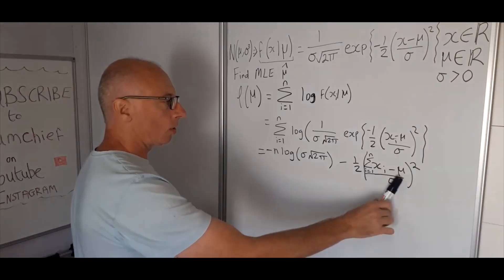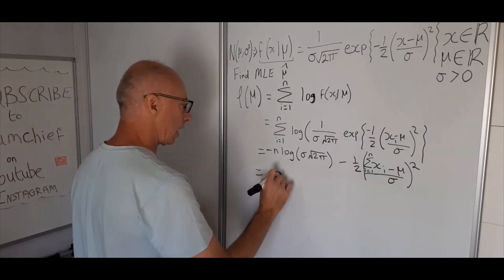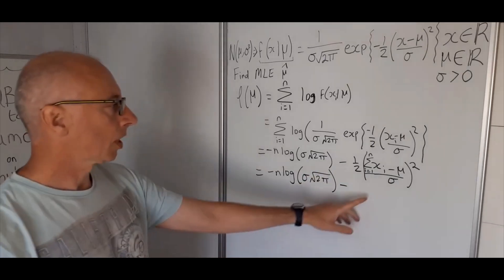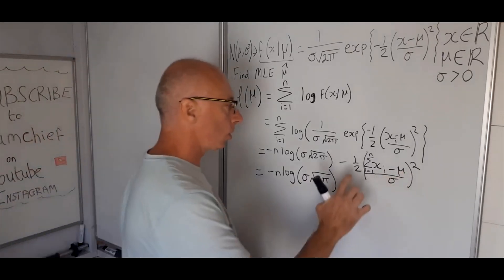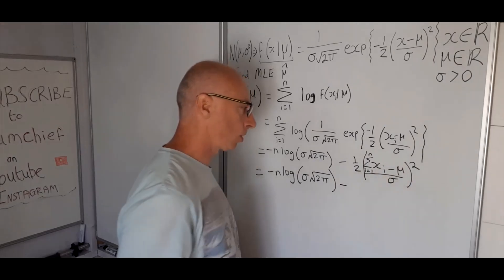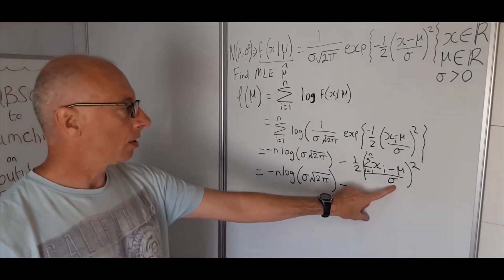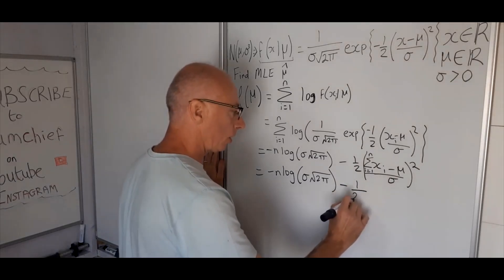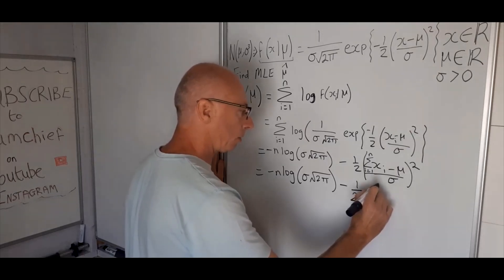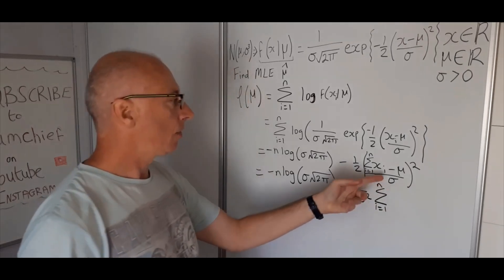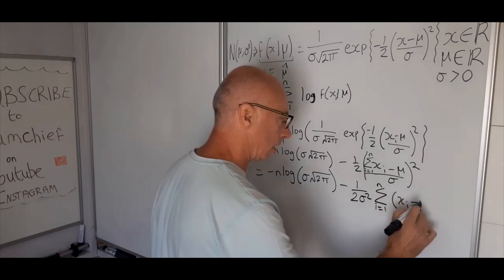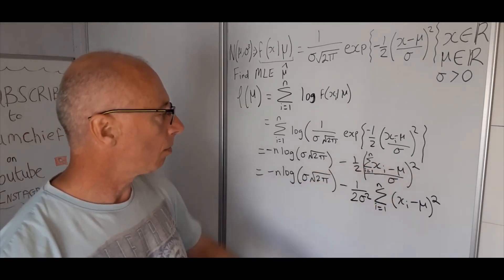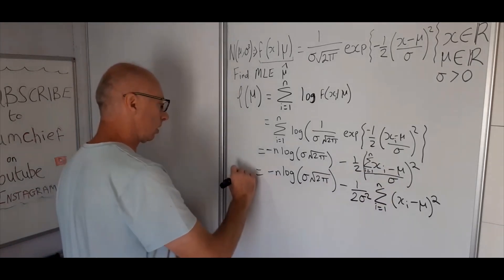Now let's simplify this a little. We write it as minus n log of sigma times root 2 pi, minus a summation term. Since the top and bottom are both squared, we can separate them: sigma squared, which is the variance, does not depend on mu, so we bring it out of the summation. We end up with minus 1 over 2 sigma squared, multiplied by the sum from i equals 1 to n of (x_i minus mu) squared. That is our log likelihood of mu.